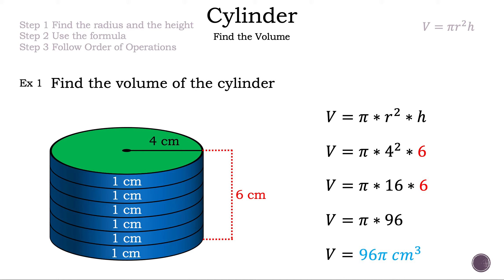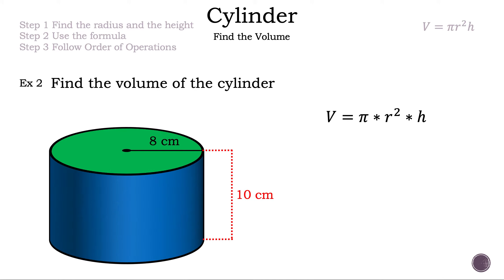Now let's take a look at example two. Find the volume of the cylinder. Volume is equal to pi times radius squared times your height. They gave us two measurements: 8 centimeters and 10 centimeters. 8 centimeters represents our radius and 10 centimeters represents our height. Let's substitute those two numbers into the formula: volume equals pi times 8 squared times 10.